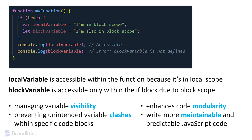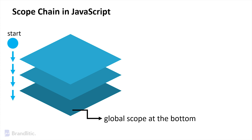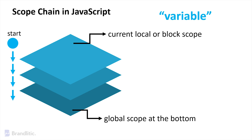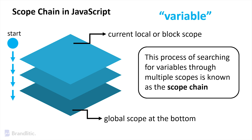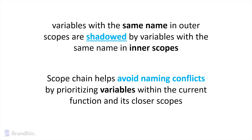Next is the very important concept of the scope chain. The scope chain in JavaScript is like a stack of transparent sheets, each representing a different scope. These sheets are stacked on top of each other with the global scope at the bottom. When you reference a variable, JavaScript searches for it starting from the top — the current local or block scope — and moves down through the sheets, looking in each scope until it finds the variable. This process of searching for variables through multiple scopes is known as the scope chain. The search stops as soon as the variable is found, and variables with the same name in outer scopes are shadowed by variables in inner scopes. The scope chain helps avoid naming conflicts by prioritizing variables within the current function and its closer scopes.